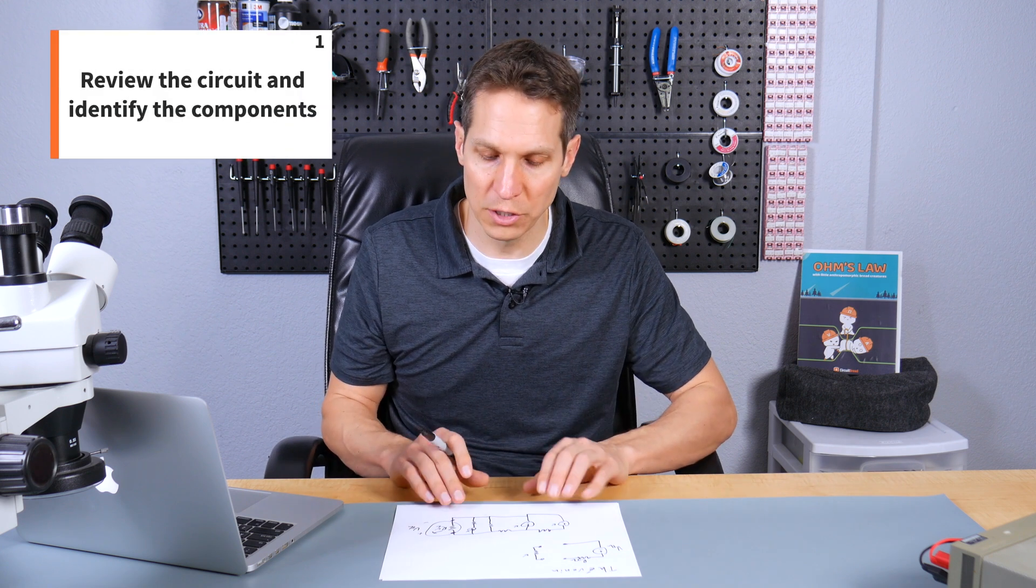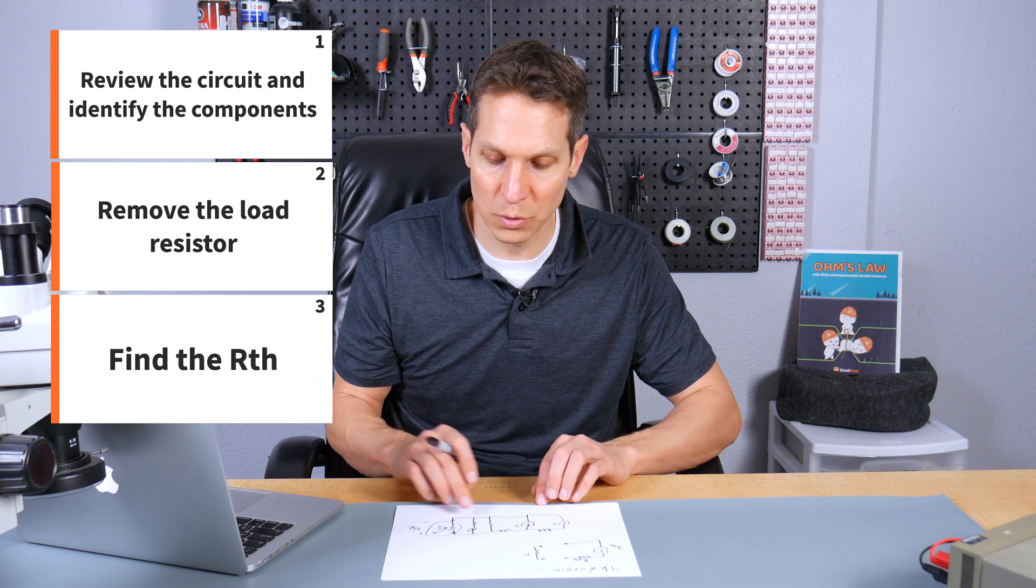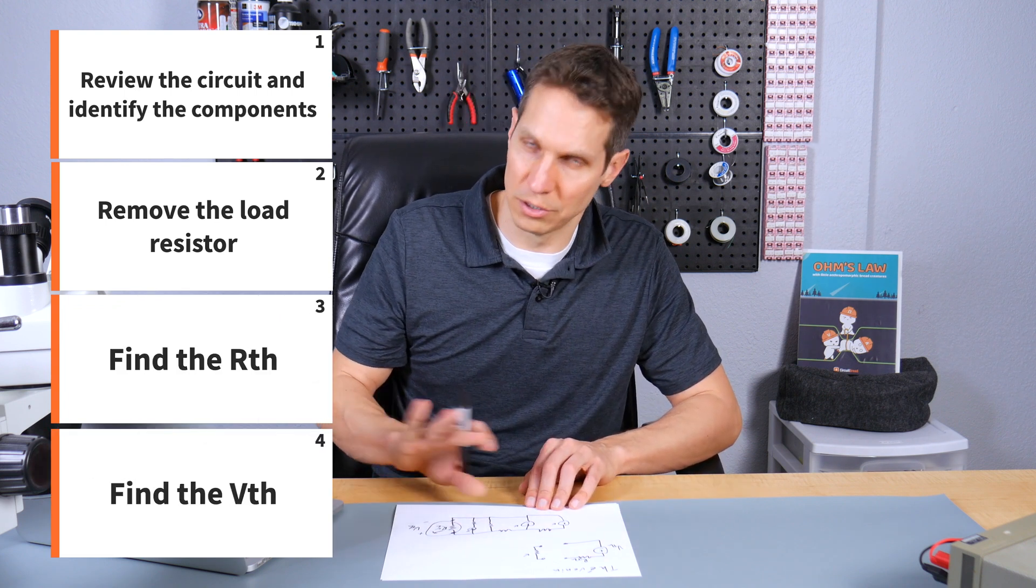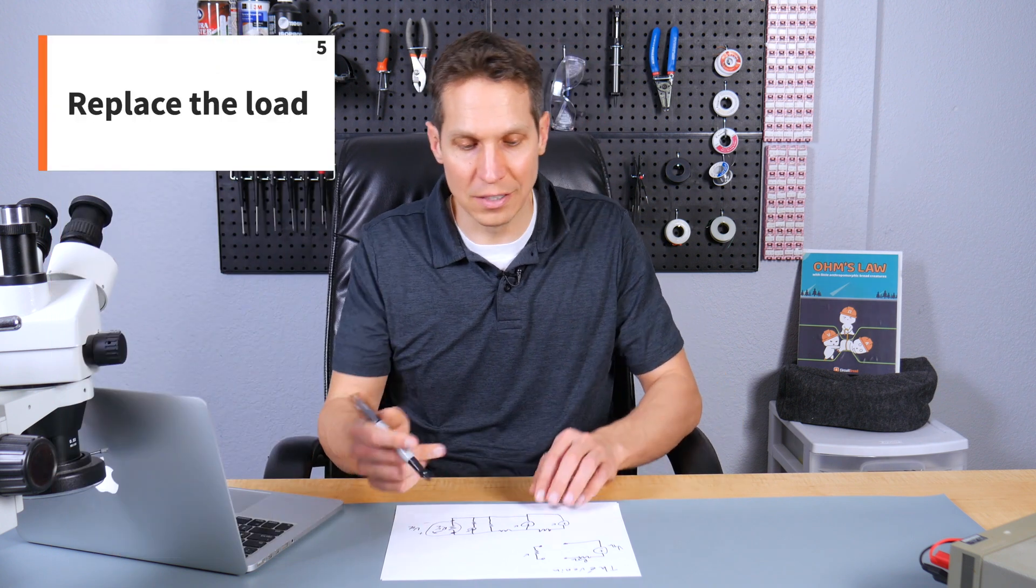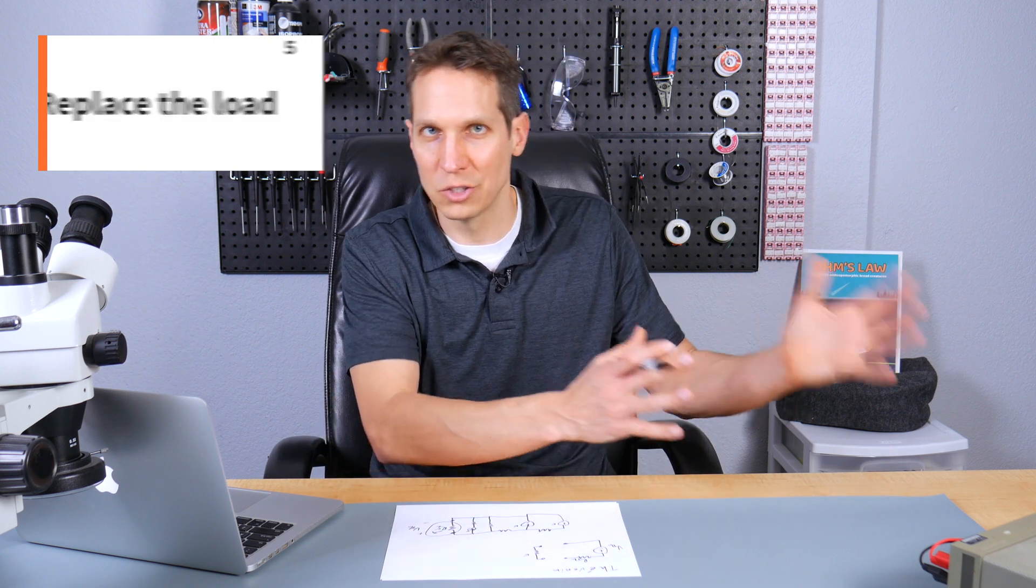Again, looking through it, figuring out what you're doing. Second, removing the load. Third, removing all the sources and finding your Thevenin resistance. Fourth, making sure you're still keeping the load out and finding your Thevenin voltage. Now, your fifth step is basically just to put the load back into your Thevenin equivalent circuit, and doing whatever analysis you need to do there. Now, as always, our final step, our sixth step is sanity check.